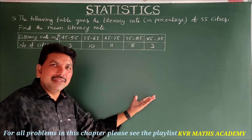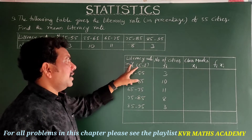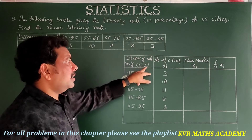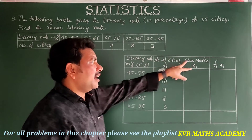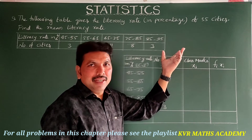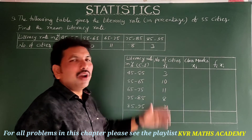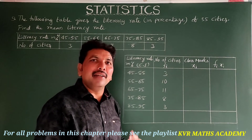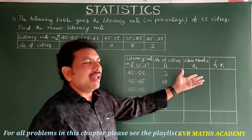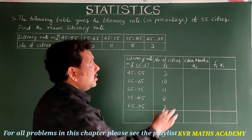I have drawn the table. Literacy rate in percent is taken as the class interval, number of cities as fi, and class marks as xi. I am applying the direct method directly, not the assumed mean method or any other method.